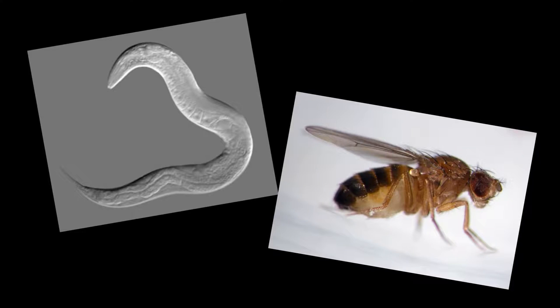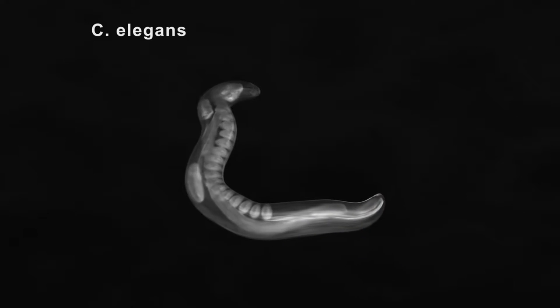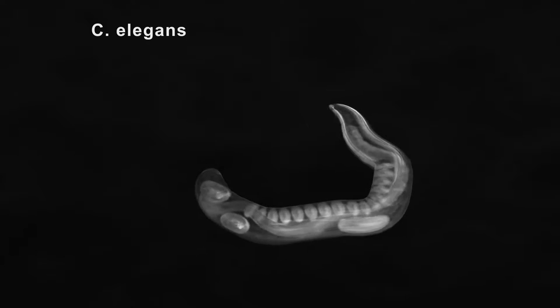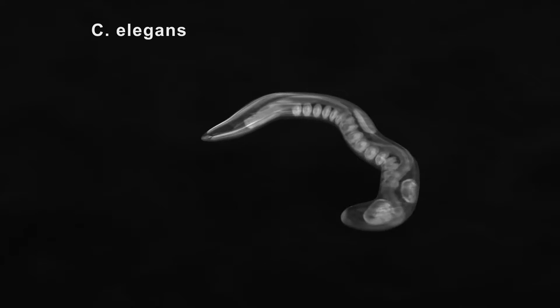Roundworms, like fruit flies, are often used as models for larger organisms. This is because their short lifespans allow scientists to observe several generations of worms within a short period of time, yielding quicker results for studies.